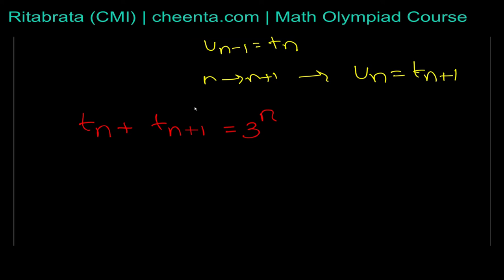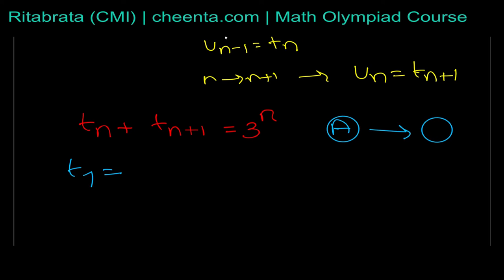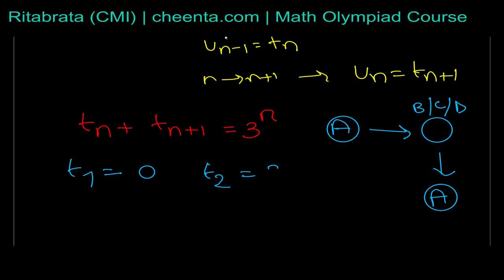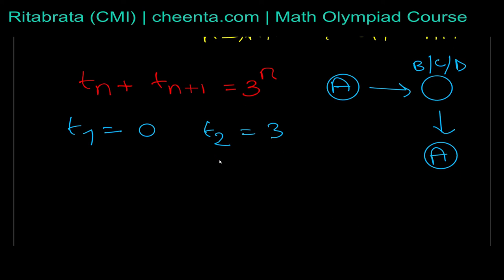Now we need the base cases. What is t_1? Starting with A, after one pass the ball cannot return to A — it goes to B, C, or D — so t_1 equals 0. What is t_2? After two passes it can return to A, and the first pass can go to any of the three others, so t_2 equals 3.